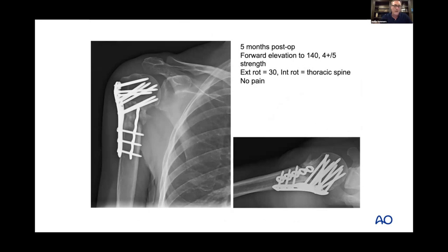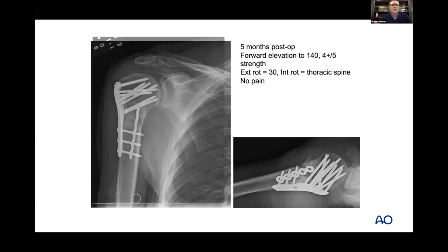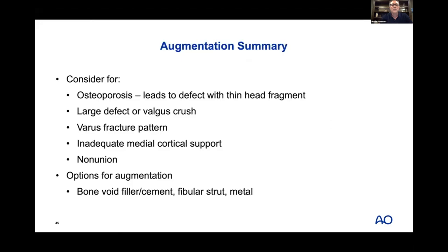Always take the non-injured side X-ray and overlay it to confirm you corrected the deformity as planned. In summary, augmentation is needed even when you can get a good reduction: with osteoporosis and a big defect or thin head fragment; varus fracture patterns with inadequate medial cortical support; and long-standing non-unions. Bone void filler cement, fibular strut, and metal are my go-tos for augmentation.